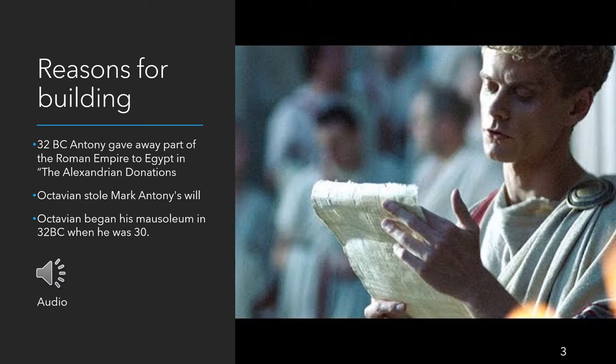So in 32 BC Antony was effectively celebrating Roman triumphs with Roman armies in Egypt, and had given away part of the Roman Empire in the Alexandrian Donations to the Egyptian queen. That same year, Octavian stole Antony's will from the Temple of the Vestal Virgins and read it to the Senate. In it, Antony stated he wanted to be buried alongside Cleopatra in Alexandria — seen as disloyalty to Rome. Octavian then began work on his mausoleum in 32 BC, wanting to demonstrate his loyalty to Rome and reinforcing to the Senate that he was a dedicated Roman, unlike Mark Antony.